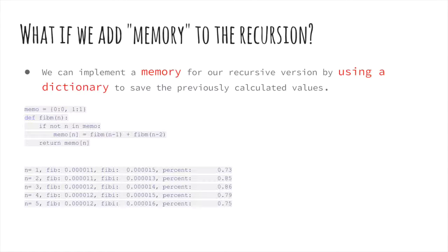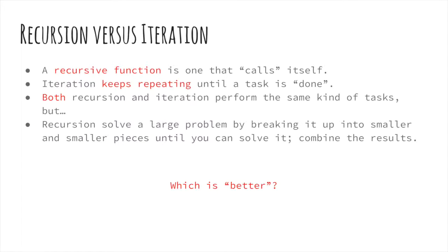We can overcome this inefficiency by implementing a memory for the recursive version using the data structure called dictionary, which saves previously calculated values. It's simply an ordered list of previous results. When n equals 1, the recursive method is faster than the iterated version by 0.73%, and when n equals 3 it's faster by 0.86%.